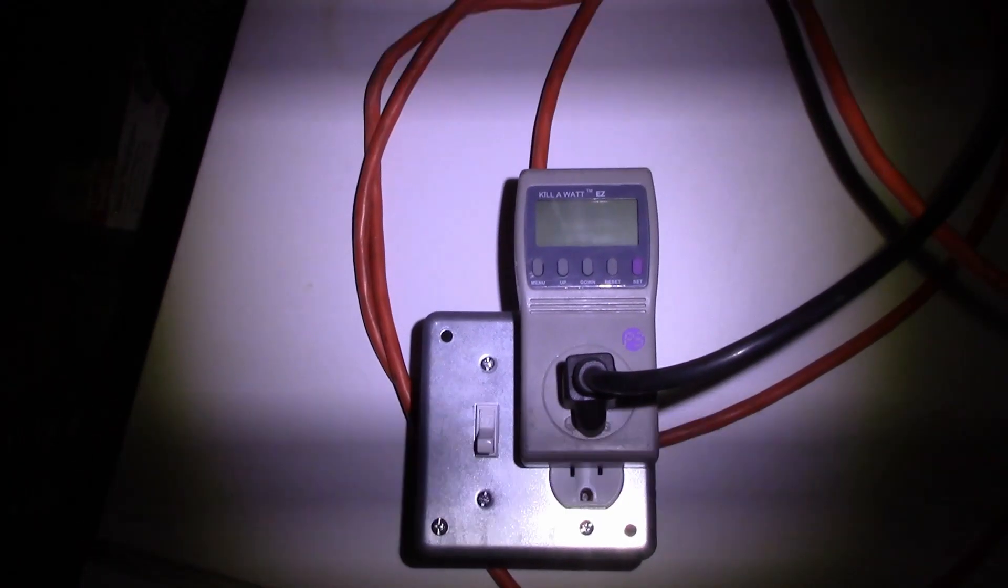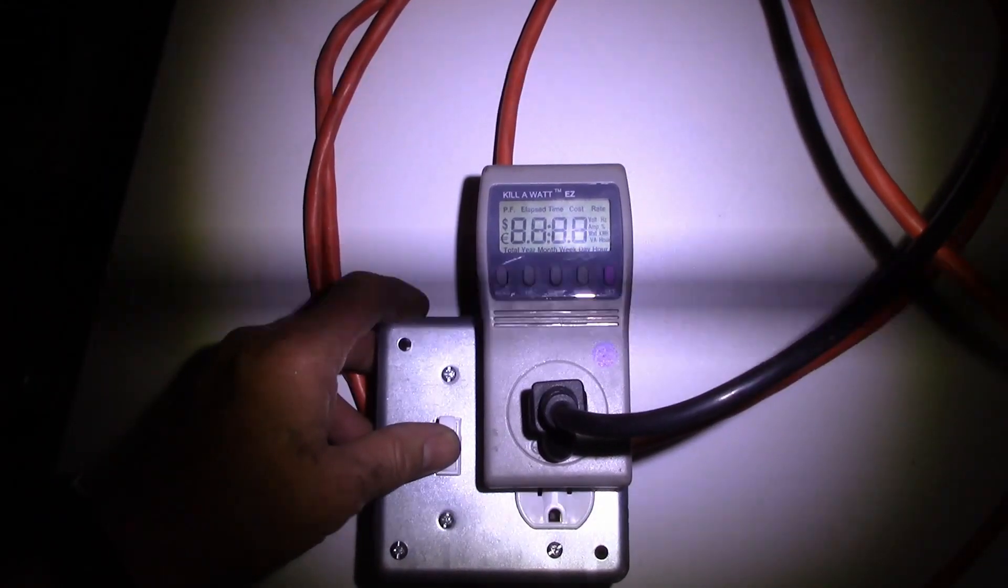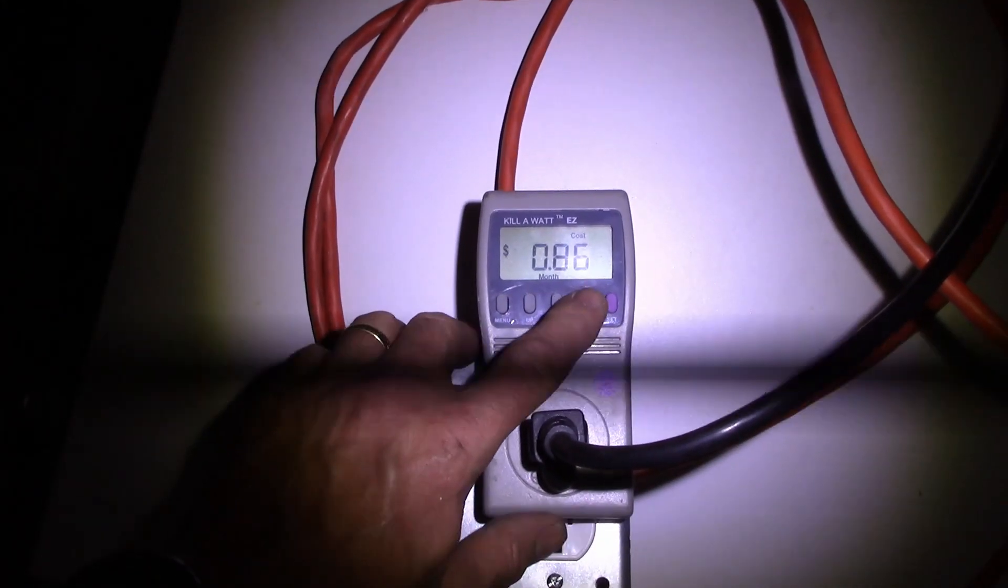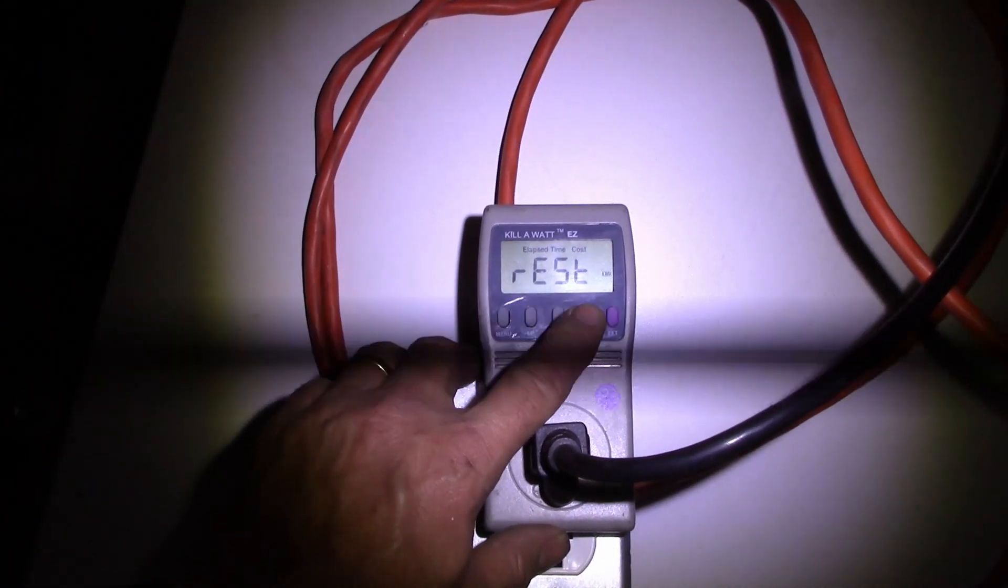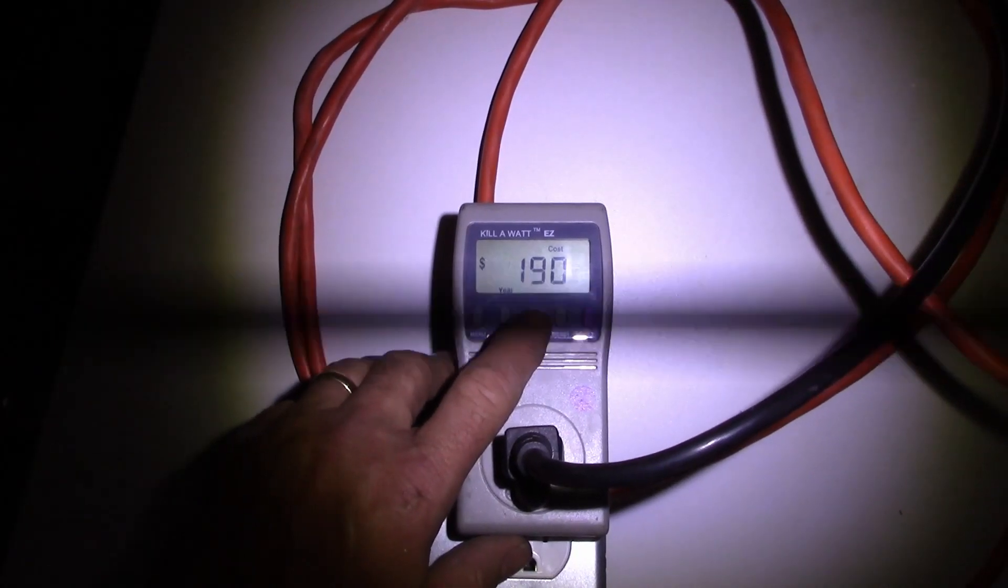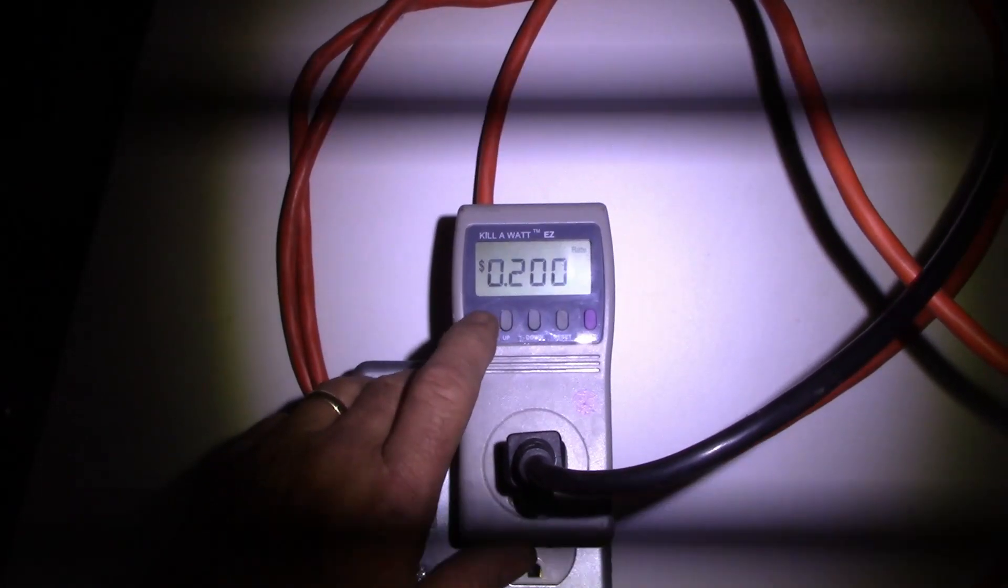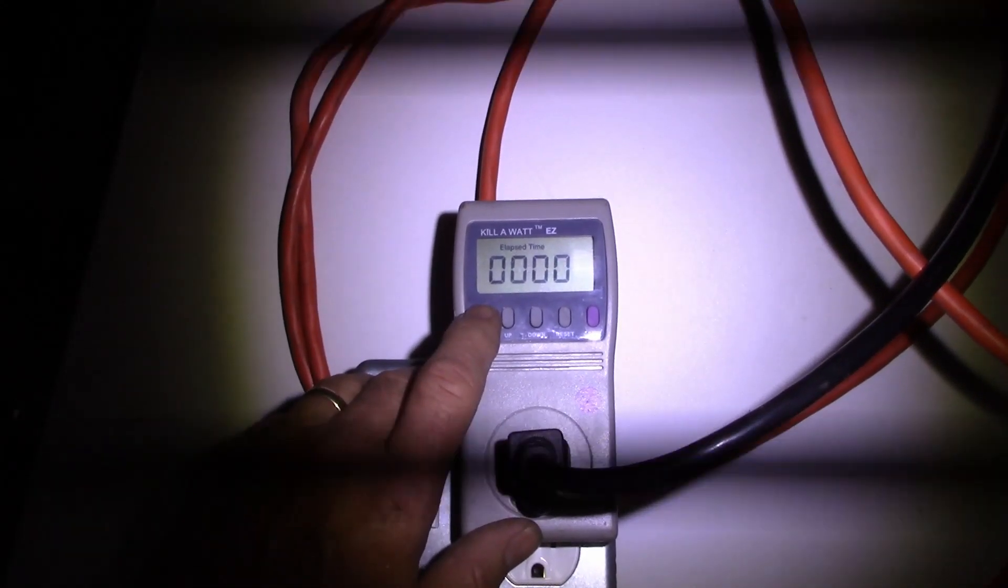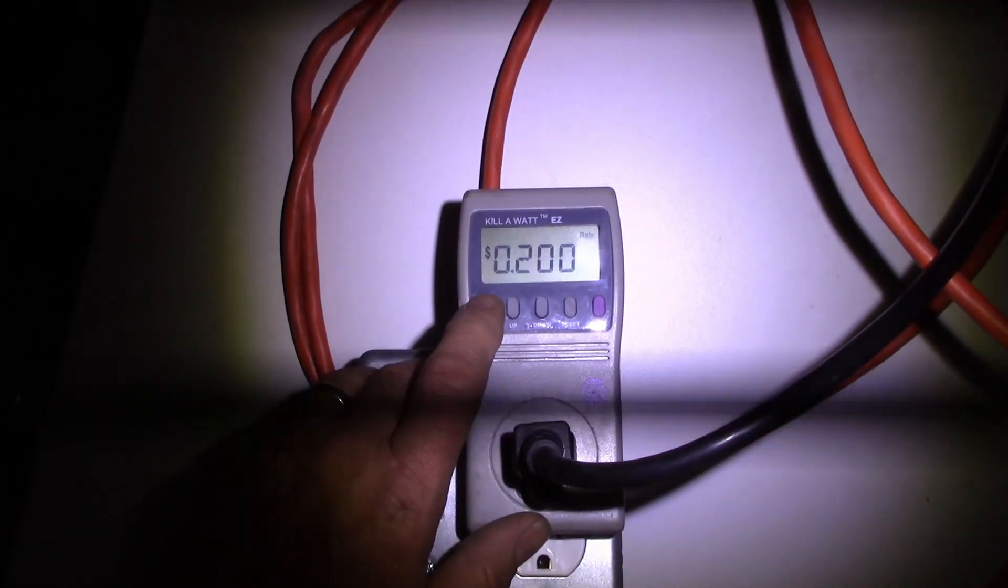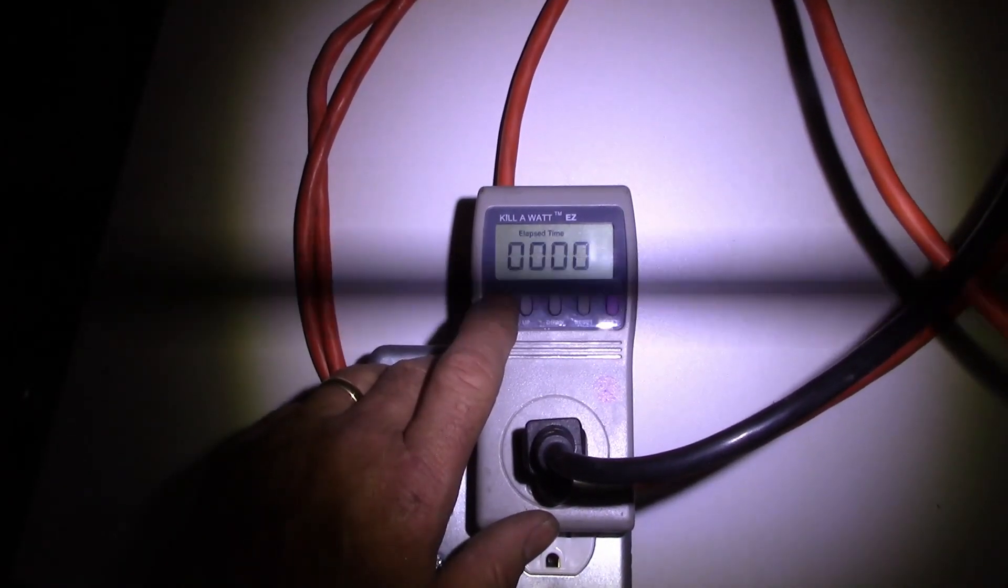All right, so sorry about the flicker, I'm just using a little LED flashlight. Anyhow, I've got my kilowatt set up, so let's go ahead and turn the fridge on. And it's on, it's running. Let's make sure I've reset the cost. We're running 1.31 amps right now. Total cost for year would be $190 at this point. We'll come back tomorrow and see what that says. That's at 20 cents per kilowatt hour.